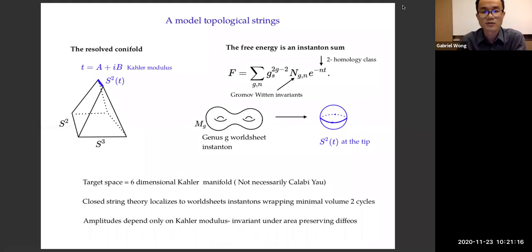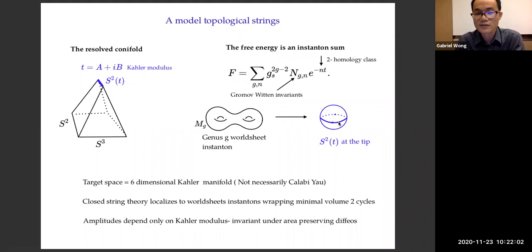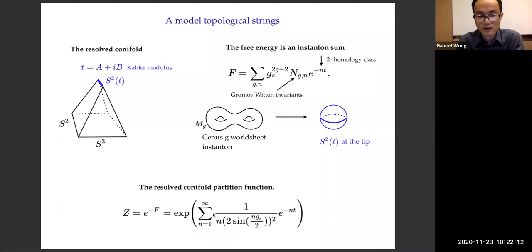Let me introduce the A-model topological string. This is a string theory whose target space is a six-dimensional Kähler manifold — it does not have to be Calabi-Yau. The closed string theory is simple because it localizes to worldsheet instantons that wrap minimal-volume two-cycles. On the resolved conifold, the only such two-cycle is the one at the tip — a sphere which we allow to have a complex Kähler area, where the real part is the area and the imaginary part is the flux. The amplitudes of the A-model only care about this Kähler modulus T. The free energy is an instanton sum, where n labels the winding number of genus-g worldsheets around the sphere at the tip. Remarkably, we can get an exact answer for this free energy by summing over the genus g of the worldsheet, giving us a useful starting point for studying entanglement.